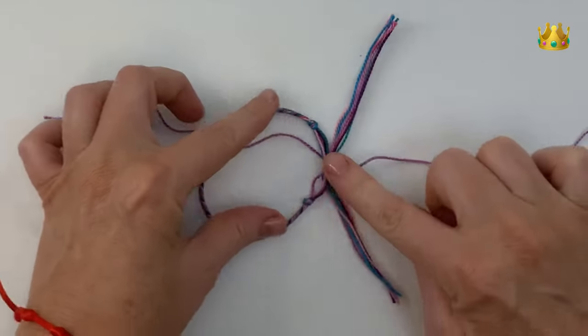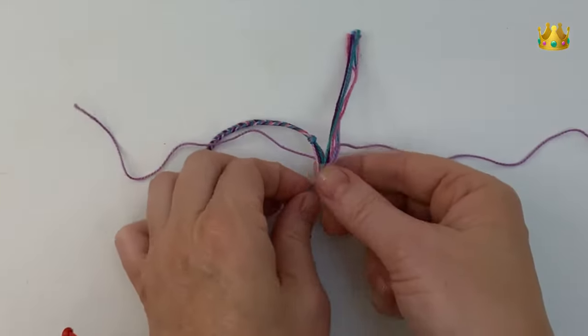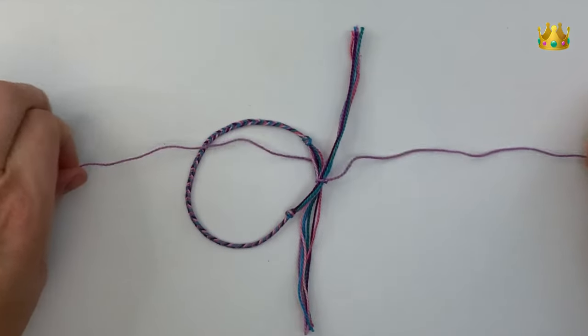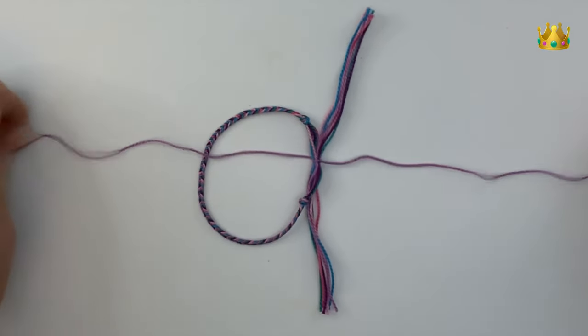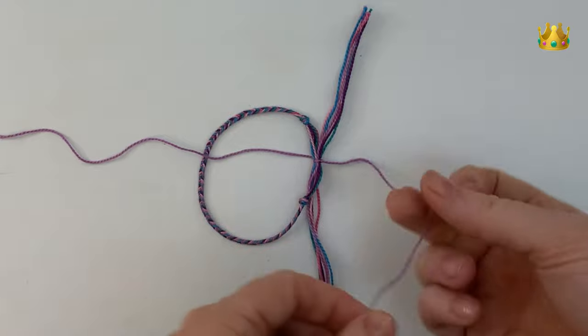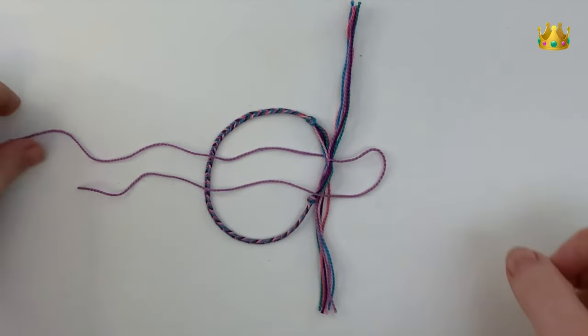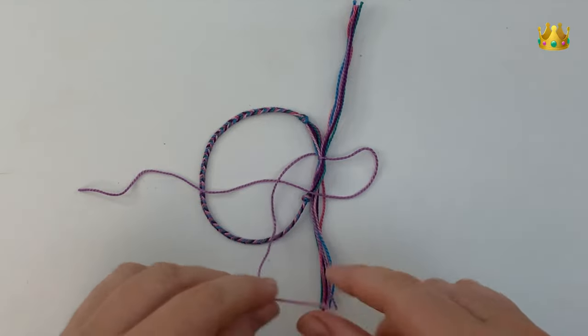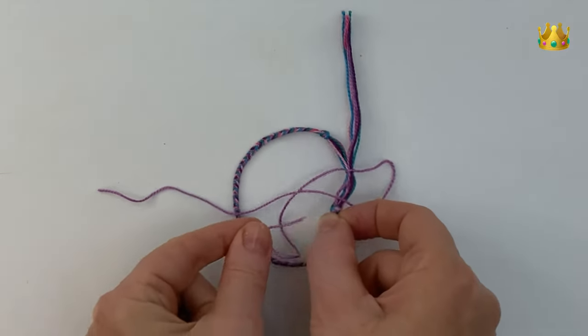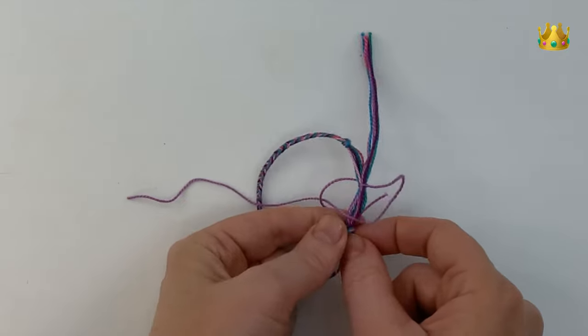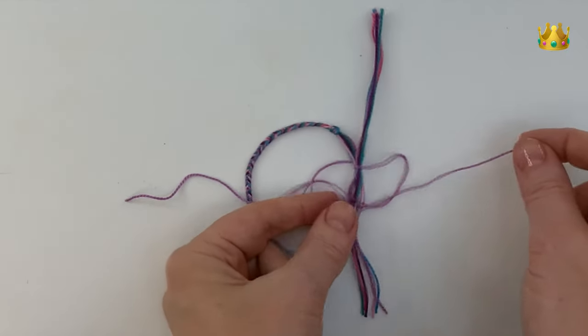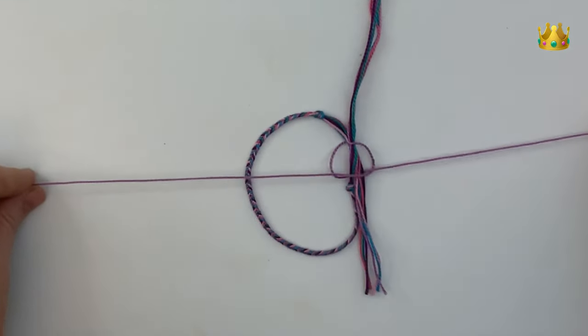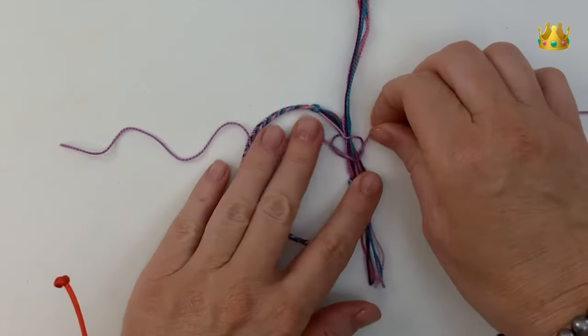With square knots we alternate each stitch. This next stitch we start with the right side cord, bringing that around over the other cords, leaving a little loop there. Then the left side cord comes down over and then underneath to come up through that loop on the right hand side. Pull that stitch nice and tight.